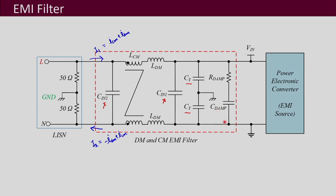We also have damping resistors and capacitors because we want to avoid the problem of resonance. Whenever you use a filter it will have resonating frequencies, which can make the entire system unstable — because the controller designed for the power electronic converter is usually designed without the filter selected. When you add the filter, you do not want to make the system unstable since both are then part of the same system and affect the dynamics of the converter. That is why damping is required, and R_damp and C_damp are provided for this purpose.